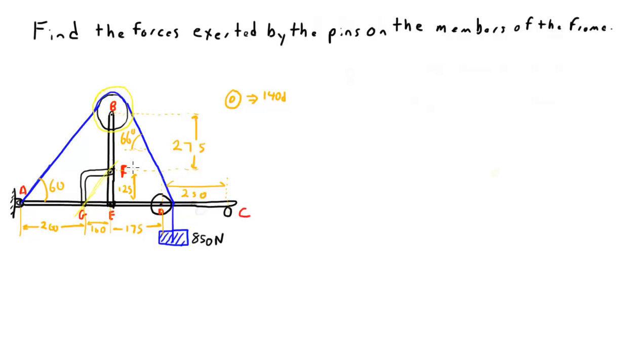So the distance from F to B is 275. The distance from E to F is 125. D to C is 250. E to D is 175. G to E is 100.